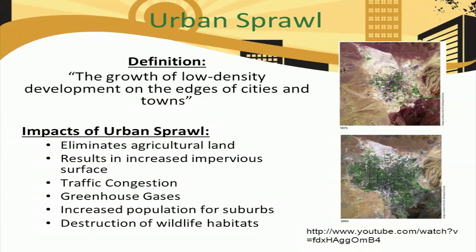Better transportation systems may ultimately lead to what is known as urban sprawl. People are now able to commute to cities in personal vehicles, and they are therefore able to reside outside of urban centers while still reaping the benefits of urbanization. Urban sprawl can be defined as the growth of low-density developments on the edges of cities and towns, including suburbs and small towns outside of larger cities. Urban sprawl may eliminate usable agricultural lands, result in increased impervious surfaces, worsen traffic congestion, increase greenhouse gas emissions, increase the number of people living in suburbs, and destroy wildlife habitats.